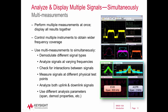Another powerful feature of the 89600 VSA software is multi-measurements. This capability allows you to make multiple measurements at one time and then display all of the results together. Depending on your hardware, you can either use a single wide bandwidth front end — say an oscilloscope — to capture a large chunk of spectrum with multiple signals, or you could control several different analyzers to obtain and measure several different signals at the same time. Multi-measurements can be used to demodulate different signals together, analyze signals at different frequencies, check for interactions between signals, and measure signals at different physical test points. You can also measure uplink and downlink signals together.